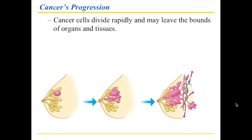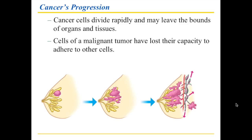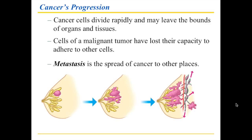One of the major causes of cancer in women is when cells of different parts of the mammary glands do not function properly, ultimately causing breast cancer. These types of cells will divide rapidly, and once they begin to divide rapidly, they may even leave the bounds of the organ in which they originate. This is a big problem because if you have a malignant tumor and these cells are no longer able to adhere to each other, cancer cells can literally travel to any part of the body. When that happens, you call that metastasis.